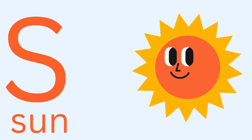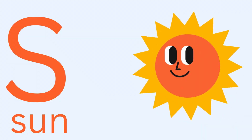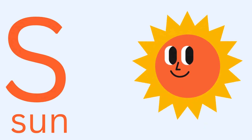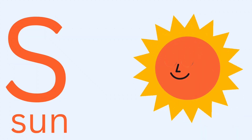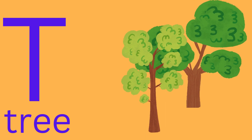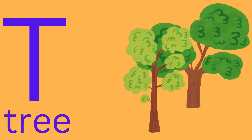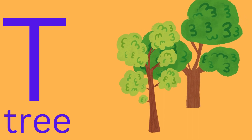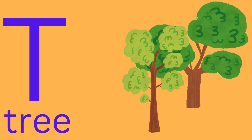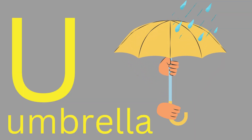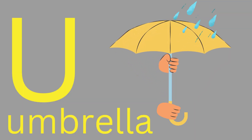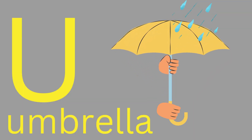S is for sun. Sun. T is for tree. Tree. U is for umbrella. Umbrella.